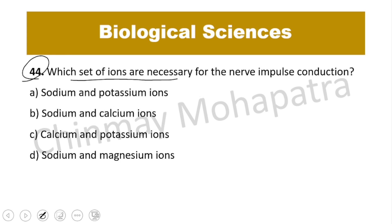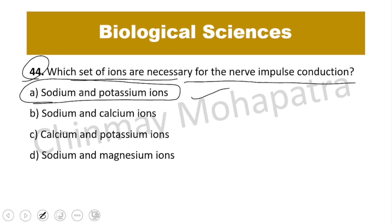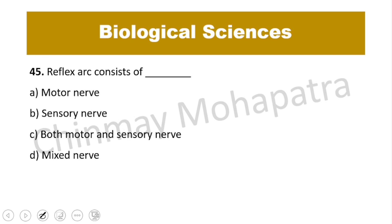Question 44: Which set of ions are necessary for nerve impulse conduction? Sodium and potassium ions are responsible — sodium-potassium ions is the right answer. Question 45: Reflex arc consists of — the reflex arc runs around the spinal cord and consists of both motor and sensory nerves. Right answer is C.